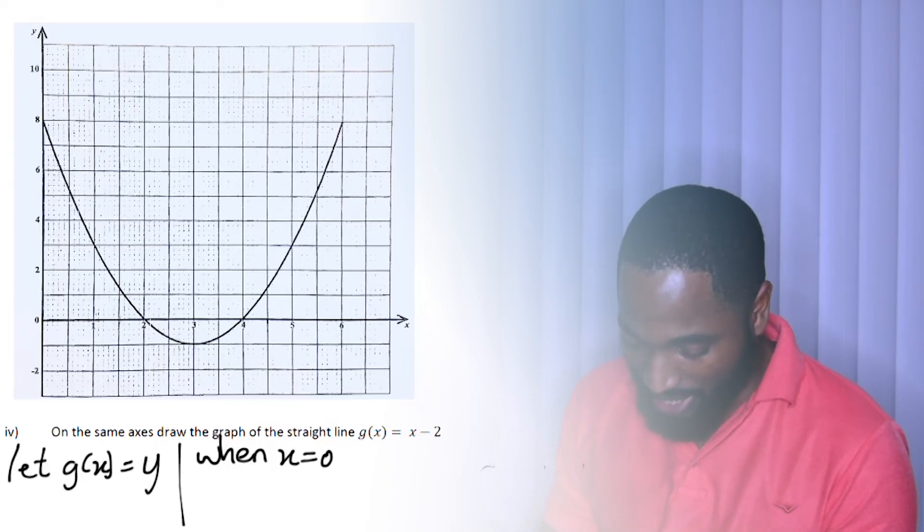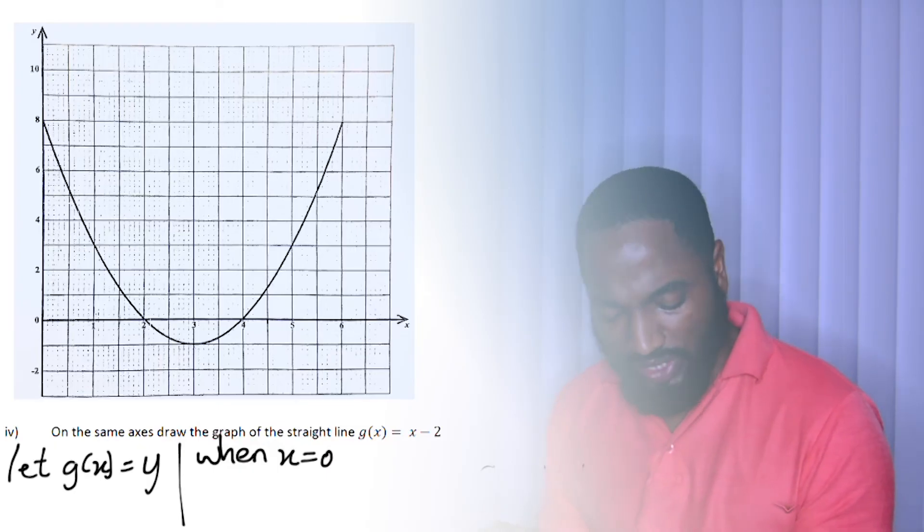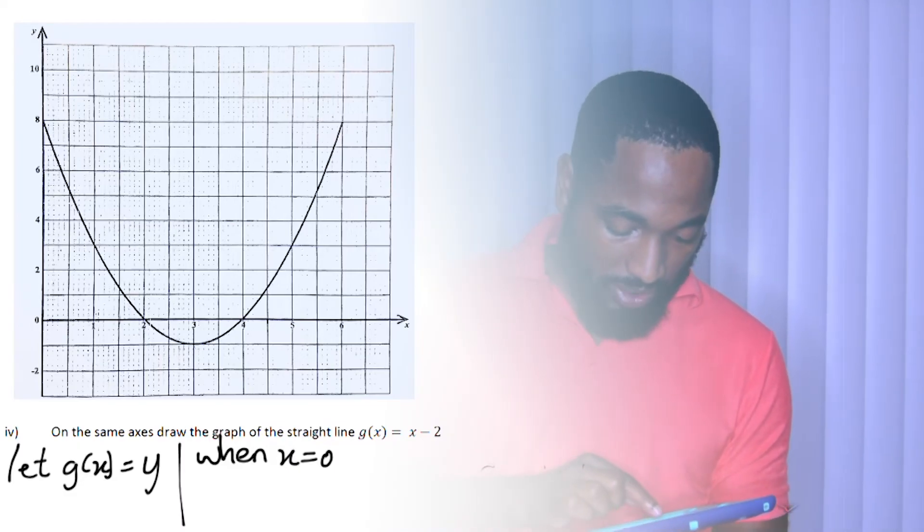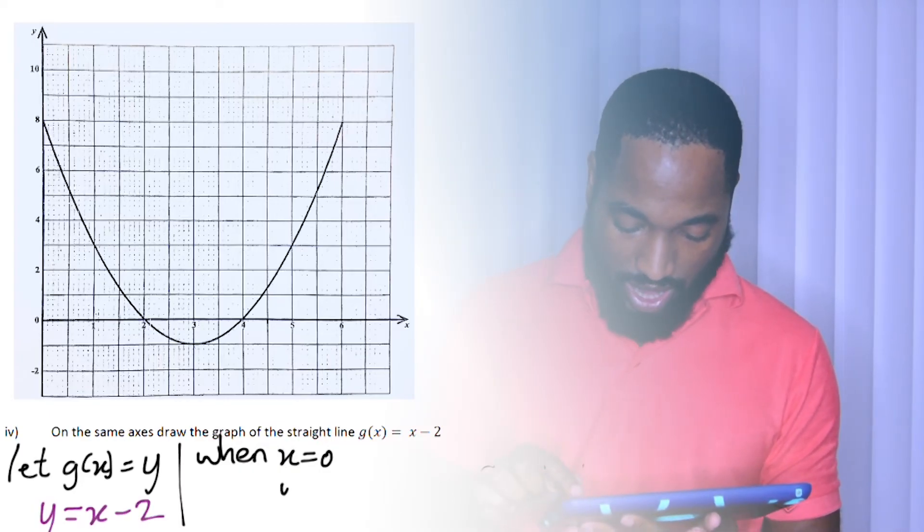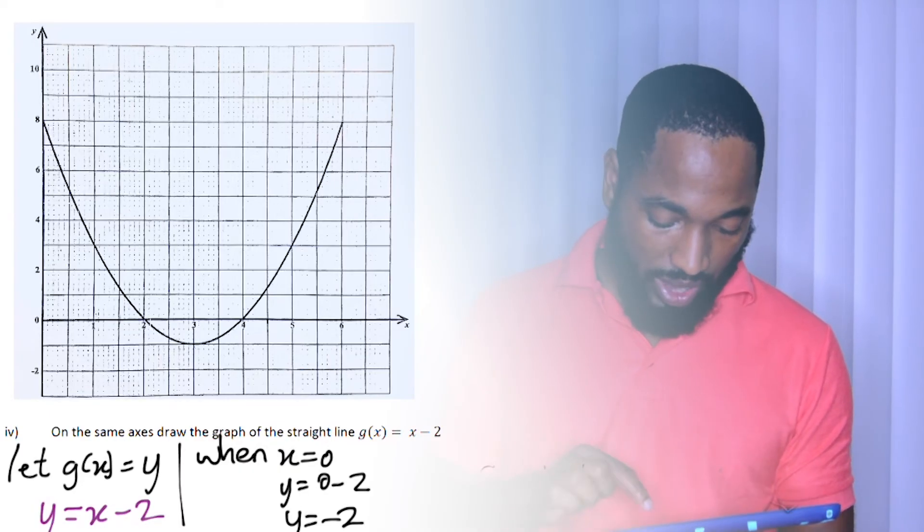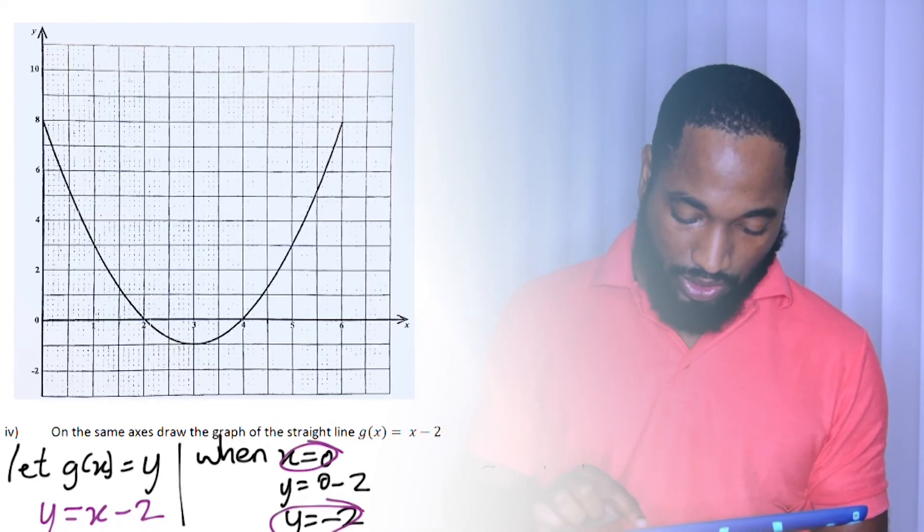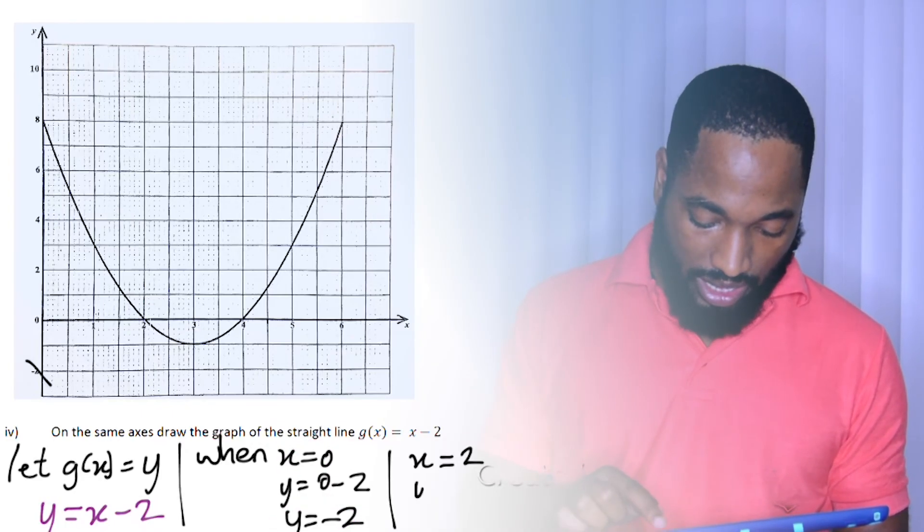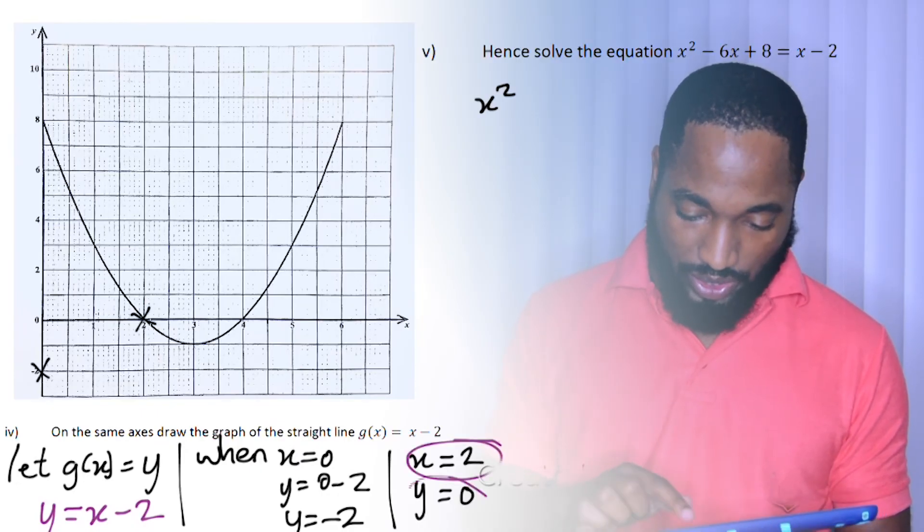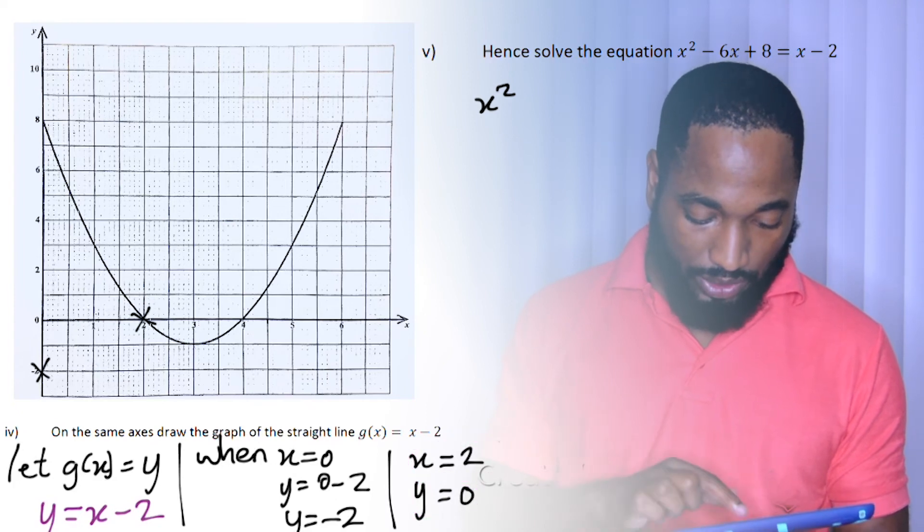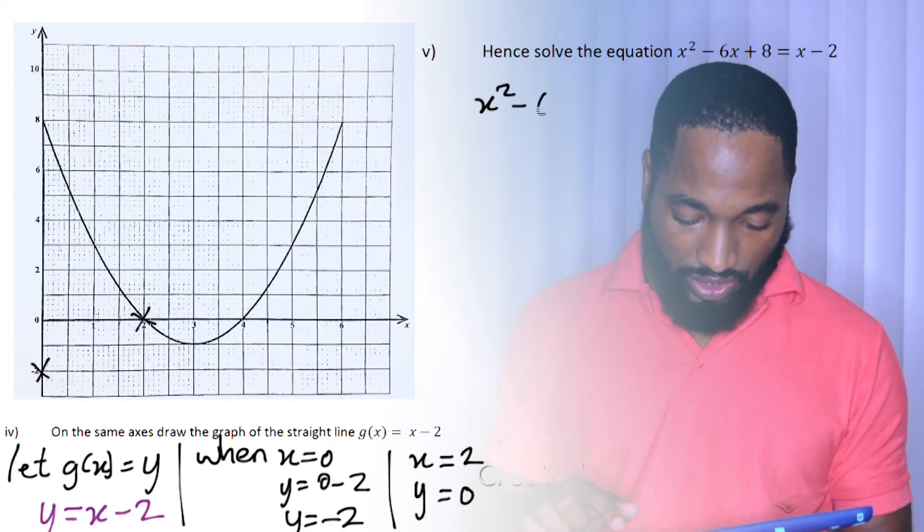Let g(x) equal y. Basically, this is like we're saying y = x - 2. When x = 0, y is going to be 0 - 2, so y = -2. We get a coordinate there of the first point. When x = 2, y = 0, you get the coordinate of the x-point here using substitution. Now you can just connect the line going along there. Beautiful.